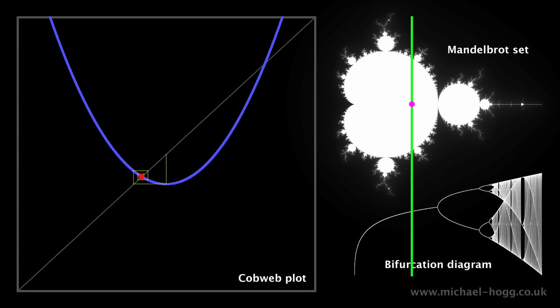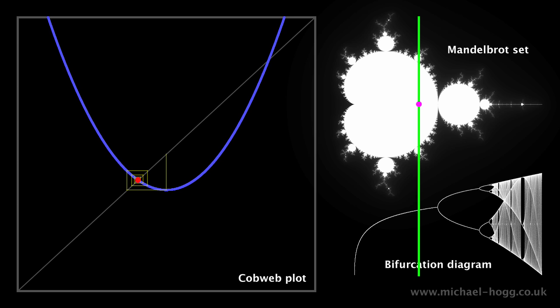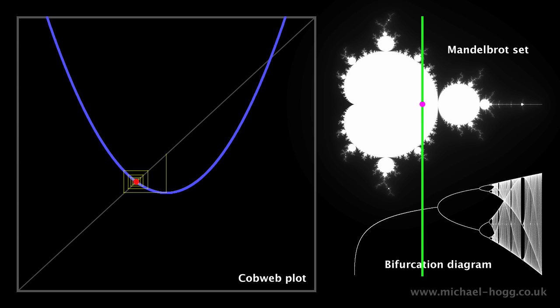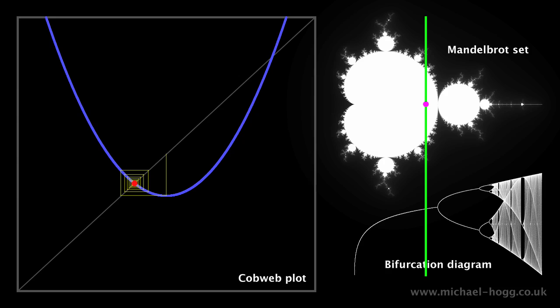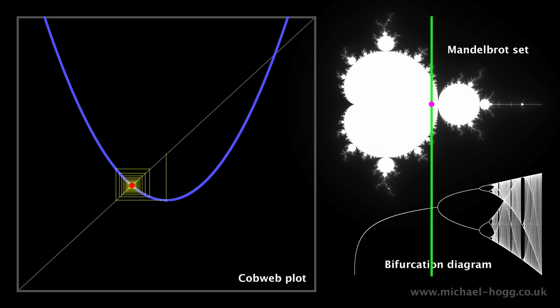When the pink dot crosses over from the main cardioid to the big circle, the yellow line will stop spiraling towards a single point and will start alternating between two points. This change of behavior is known as a bifurcation, and the new attractor is called a limit cycle, because the iterations cycle back and forth between the two points.